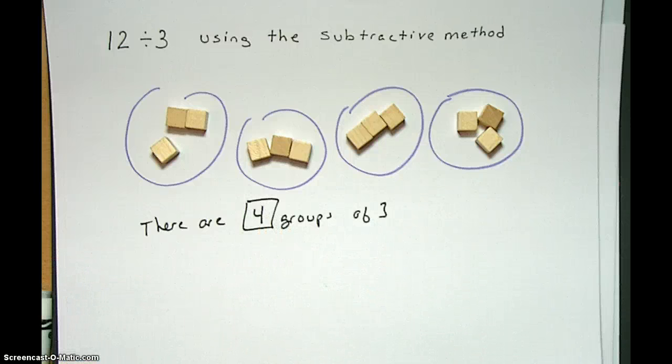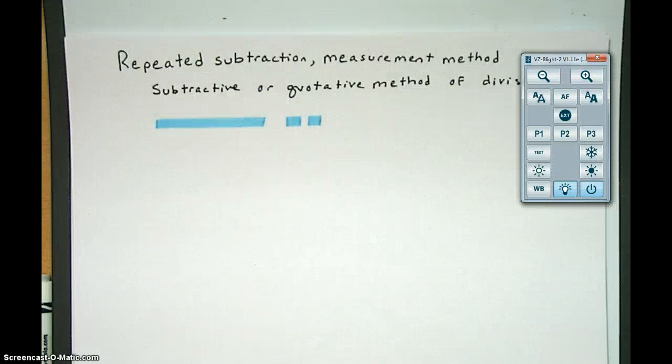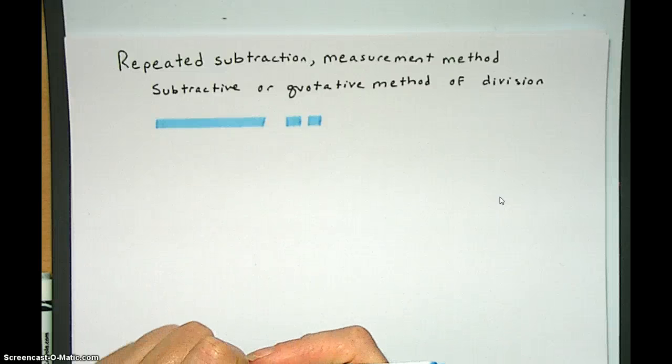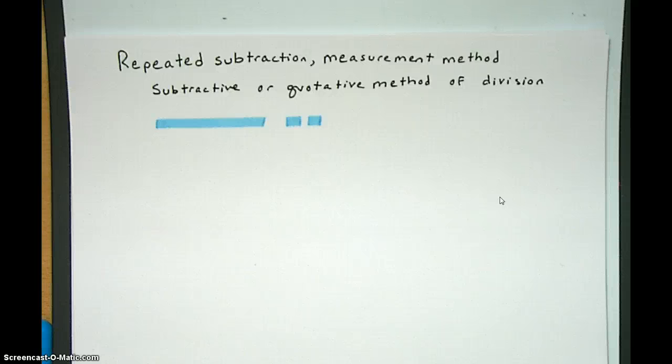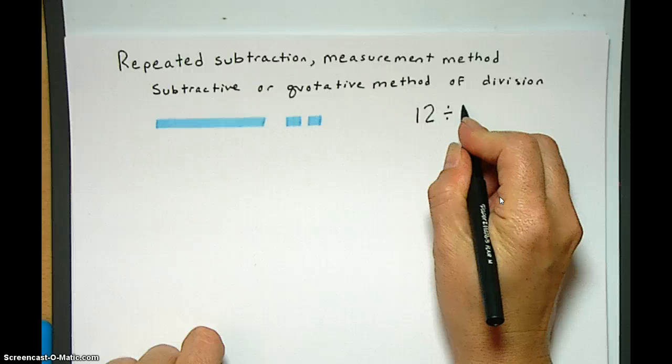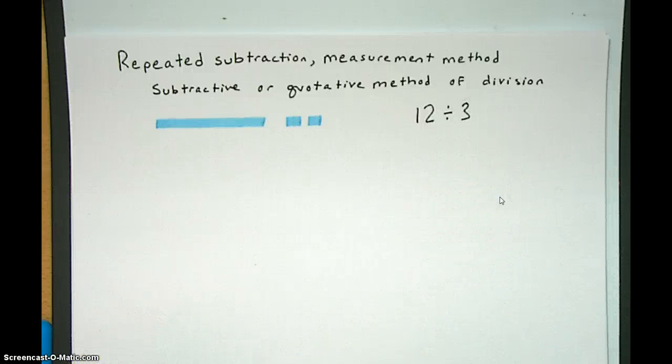Okay, so that's a way to do it with manipulatives. Now let's look at a drawing for it. All right, so now we're just going to draw because we want to or need to because you can't turn in manipulatives on the test. So here we have our problem that we were doing, 12 divided by 3 using repeated subtraction.